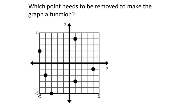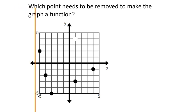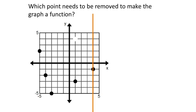This is the same graph, but now we're asked to remove a point to make it a function. The two points that caused the problem were (1, 4) and (1, -3). It doesn't matter which one you remove — just get rid of one of them. I choose to remove (1, 4). Now scanning with the vertical line, every position touches the graph only once. It is now a function.